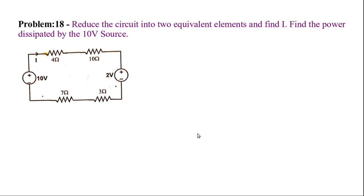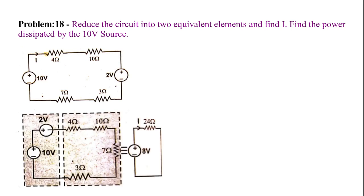First, check whether the resistors and voltage sources are connected in series or parallel. Since all elements are connected one after the other, we use the series resistor formula: R_eq = R1 + R2 + R3 + R4. The voltage sources are also connected in series, so we add them as V1 + V2. Finally, redraw the circuit with one equivalent source and one equivalent resistor.